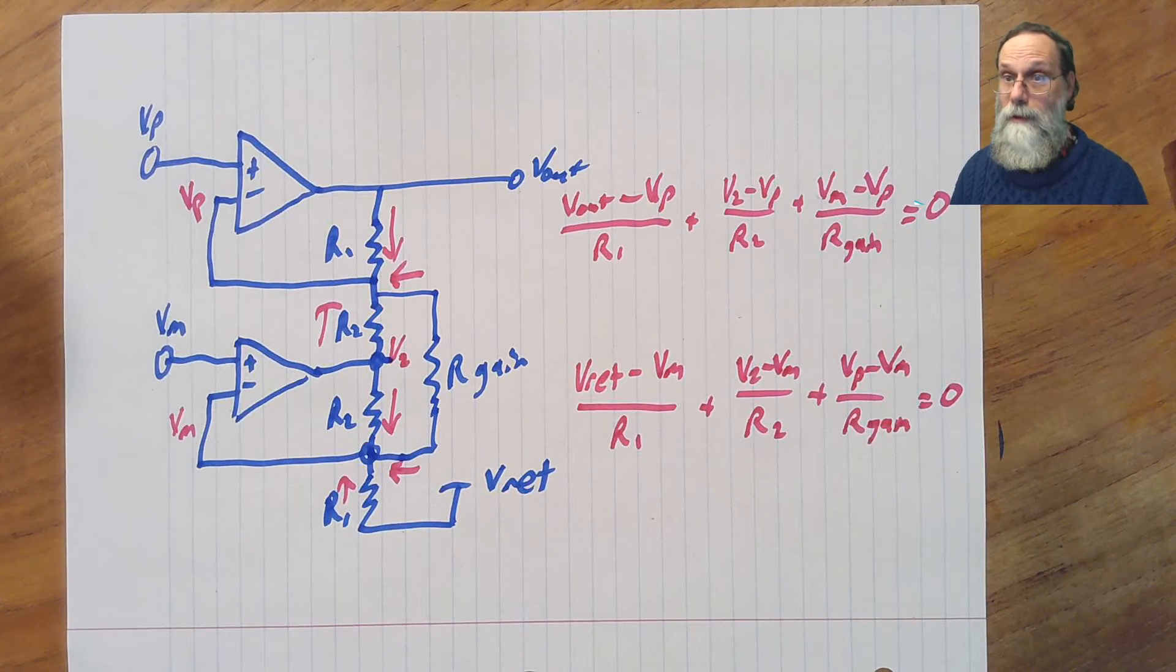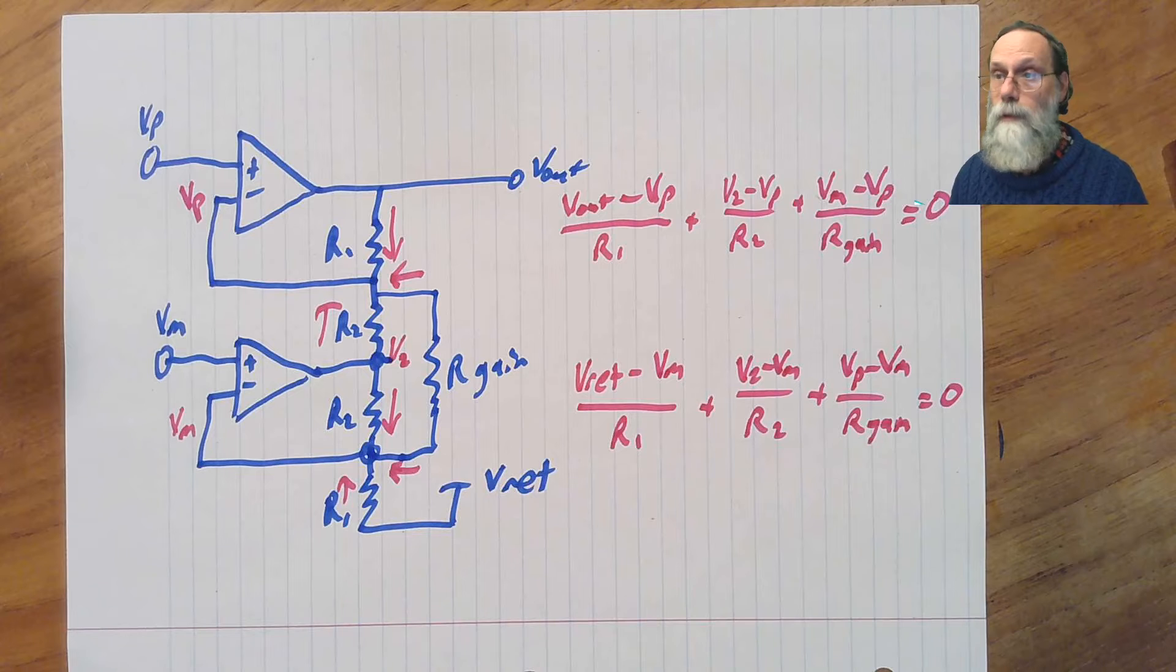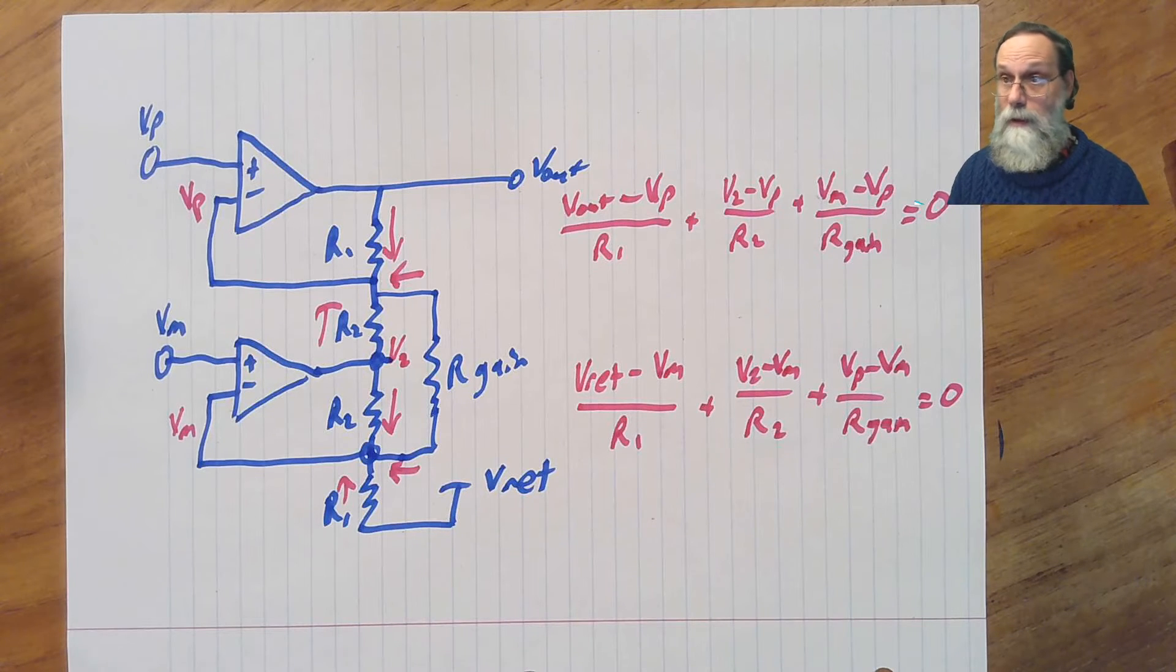We've got two equations, two unknowns, v2 and vout. We're really interested here in what's vout. v2, well, we are a little bit interested in that, but let's worry about that later.